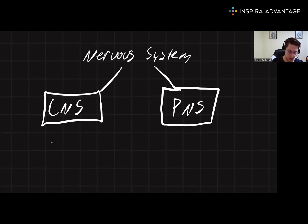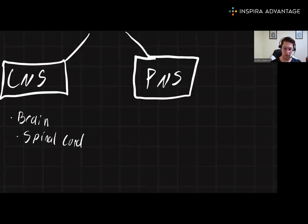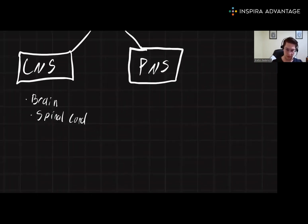The CNS is made up of the brain and spinal cord, while the peripheral nervous system is made up of everything else. The peripheral nervous system then divides into two smaller systems.